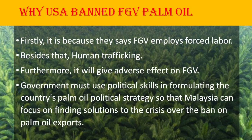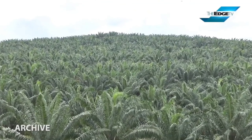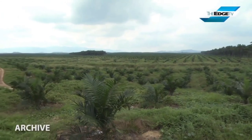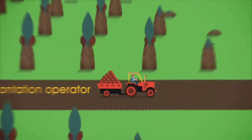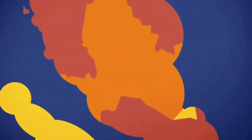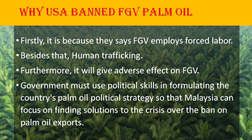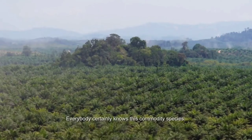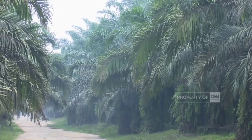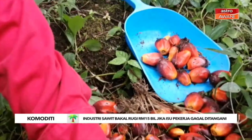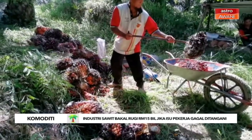Next, the issue of human trafficking. The ban by the U.S. Customs and Border Protection Agency (CBP) follows a human rights group calling on U.S. authorities to investigate FGV over concerns of forced labor and human trafficking in the company. Furthermore, it will have an adverse effect on FGV's company reputation and shares, and will indirectly have implications for almost 102,000 settlers throughout Malaysia, as well as create an incorrect picture of the country's image on the issue of forced labor.